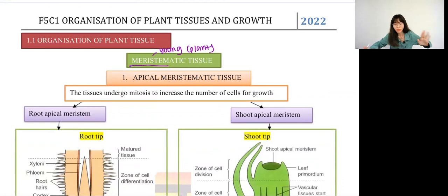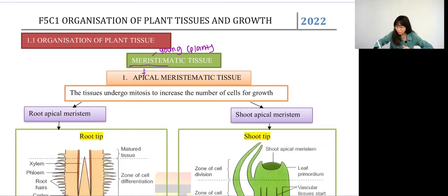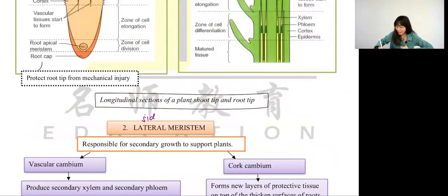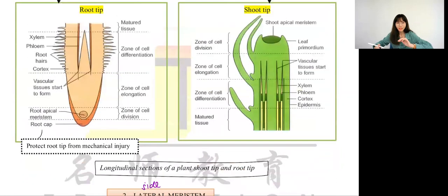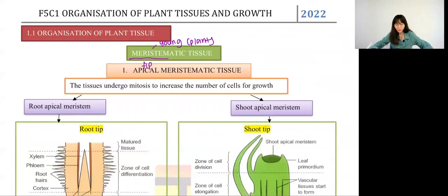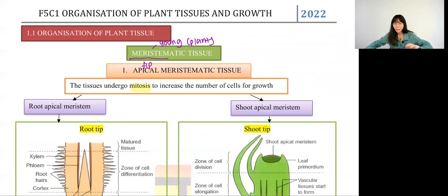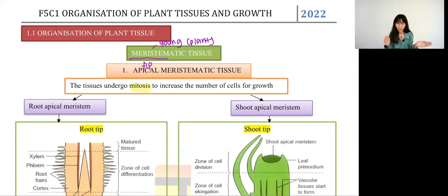This meristematic term can only be used in plants. For humans we cannot use meristematic — we just say 'young.' So for plants we call this meristematic. Apical means 'tip,' lateral means 'at the side.' Let's start from apical meristematic tissue first. If it's at the tip, they will increase in number of cells by undergoing a process called mitosis. Mitosis increases cell number: one to two, two to four, four to eight. We have two different apical meristematic locations: root tip and shoot tip.